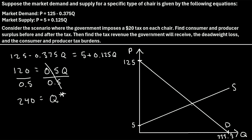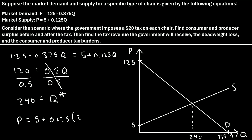So this quantity where the supply curve intersects the demand curve is 240. To figure out the price, we plug 240 into the market supply equation. We get P is equal to 5 plus 0.125 times 240, which turns out to be 30. So we get 5 plus 30, which is 35. Our equilibrium price is $35. So that's our equilibrium price and equilibrium quantity.